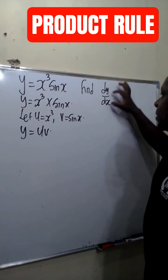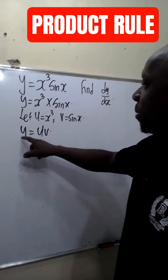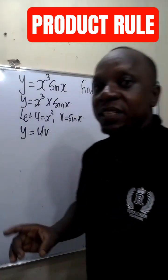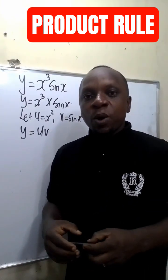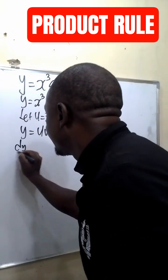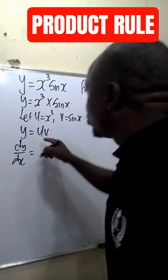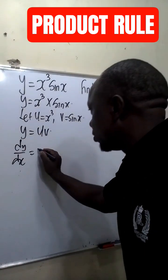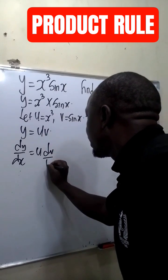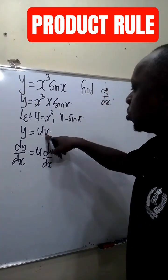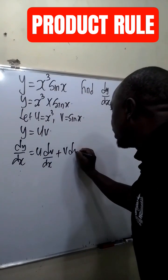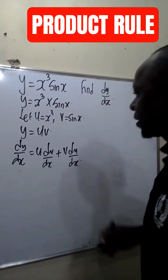We are asked to find the derivative of y, and y is a product of two functions. To find the derivative of a product of two functions, we are going to apply the product rule. That is, dy/dx is equal to u times dv/dx, plus v times du/dx.